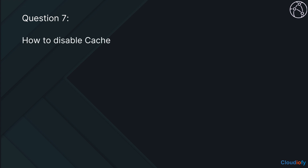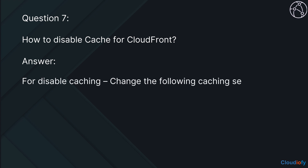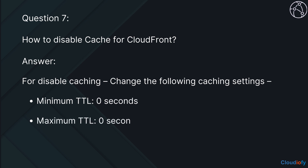The next question is, how to disable cache for CloudFront? To disable caching, change the following caching settings: Minimum TTL to 0 seconds, Maximum TTL to 0 seconds, and Default TTL to 0 seconds.